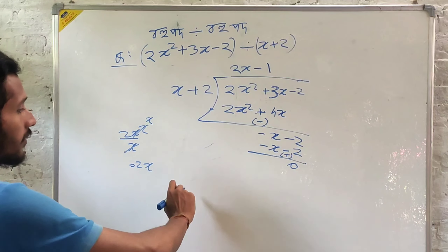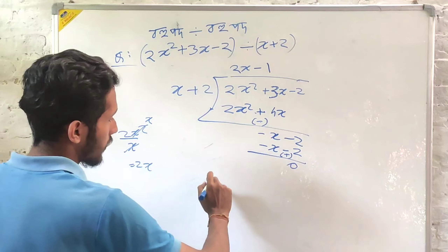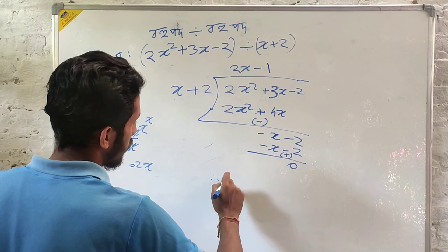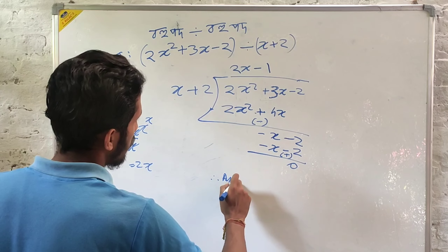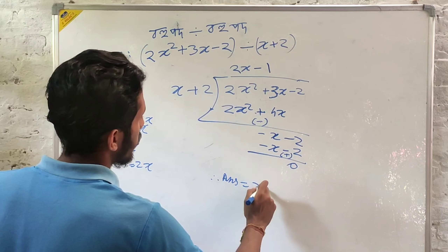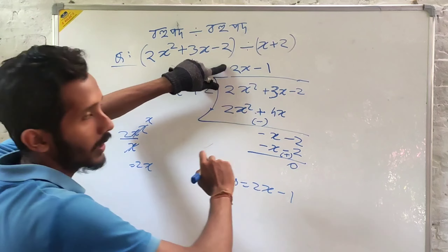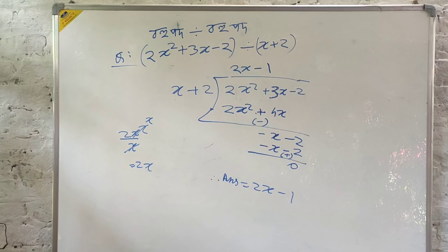Therefore, the answer is 2x minus — 2x minus is the answer.